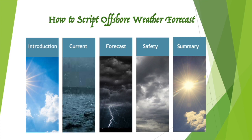How to write a script for an offshore weather forecast: 1. Current conditions — provide an overview of the current weather conditions including the temperature, wind speed and direction, wave height, and any other relevant information. 2. Forecast — provide a detailed forecast for the next 24 to 48 hours, including any potential hazards such as storms, high winds, or rough seas. Use maps, charts, and other visuals to help people understand the forecast. 3. Safety information — provide safety information for those who may be affected by the weather conditions, such as boaters or fishermen.